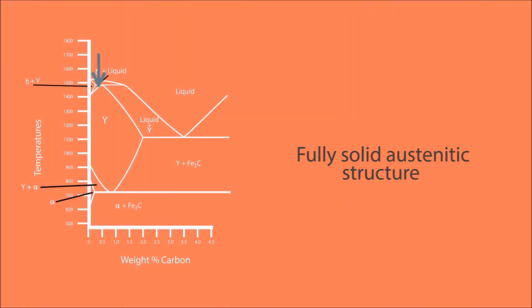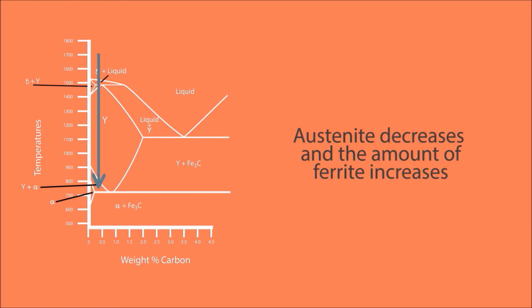Until we have a fully solid austenitic structure. As we decrease in temperature further, the structure remains austenite until we hit 820 degrees Celsius, where it starts to form body-centered cubic ferrite. From 820 to 723 degrees Celsius, the amount of austenite decreases and the amount of ferrite increases.